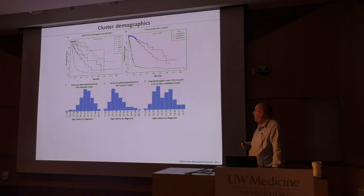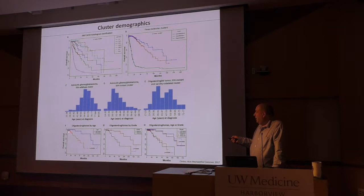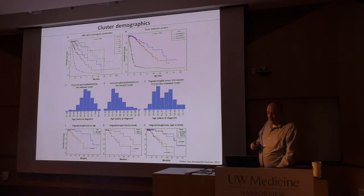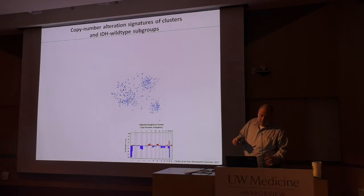Taking the median age of 45 for oligodendrogliomas and splitting — independent of grade, you get a risk stratification where age 45 or older predicts poor prognosis, similar to grading. When you overlap grade and age, they look quite similar — grade anaplastic or age 45 or older both tend to predict poor prognosis.